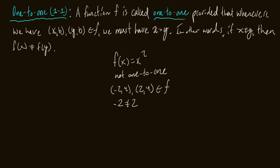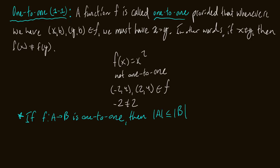As a side note: if f is a function mapping A to B and is one-to-one, then at the very least the size of A must be less than or equal to the size of B. Because if we have more elements in A than in B, then obviously at least two elements will be sent to the same output in B. That intuitive reasoning is a teaser for the next video.